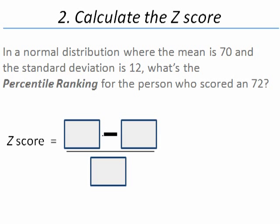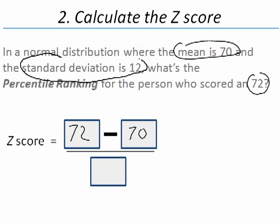Help me fill out these boxes. What goes in the top left box? That's right, 72, our value. And in our top right box, the mean, 70. Now what about the bottom box? Our standard deviation of 12. Okay, so 72 minus 70, that's 2 over 12.